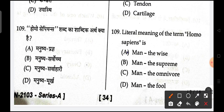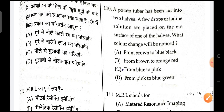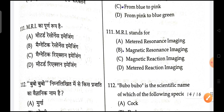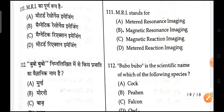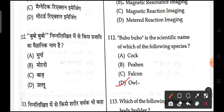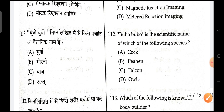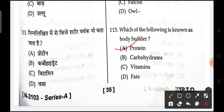Next is, a potato tuber has been cut — the correct answer is that it will turn blue-black. Next is, MRI stands for magnetic resonance imaging. Next is, the scientific name of owl is Bubo. Next is, which is the bodybuilder nutrient? Protein is the correct answer.